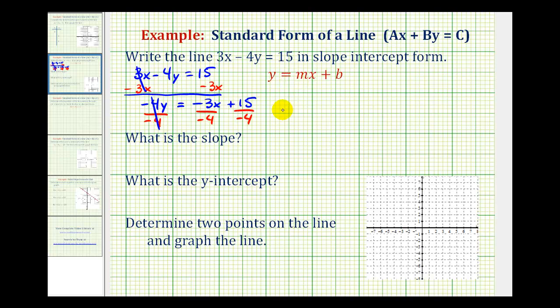Here we'd have 1y or y. Here a negative divided by negative is positive, so we'll have 3 fourths x. And then here, this would be plus negative 15 fourths, or just minus 15 fourths.